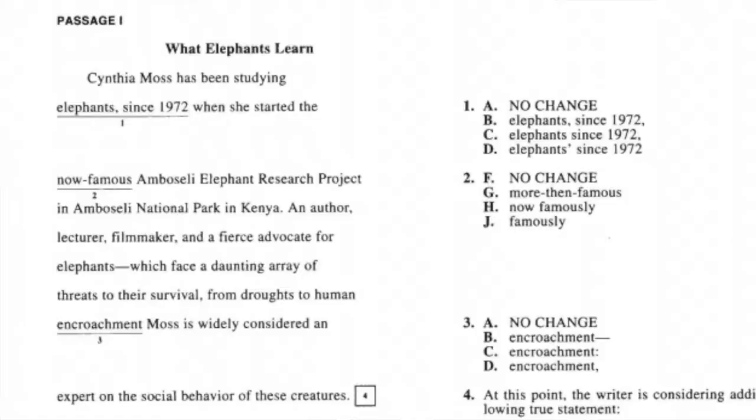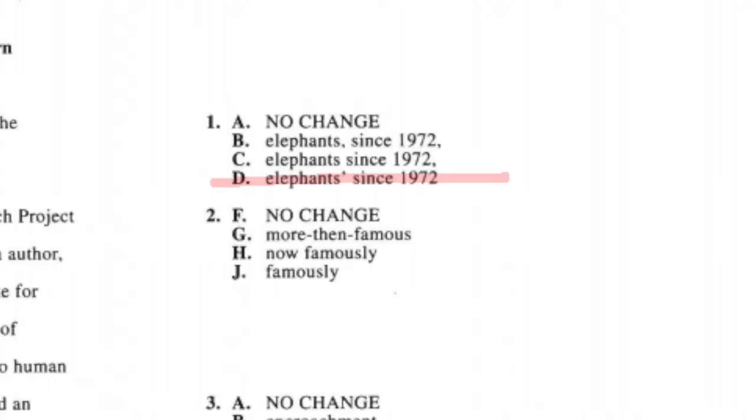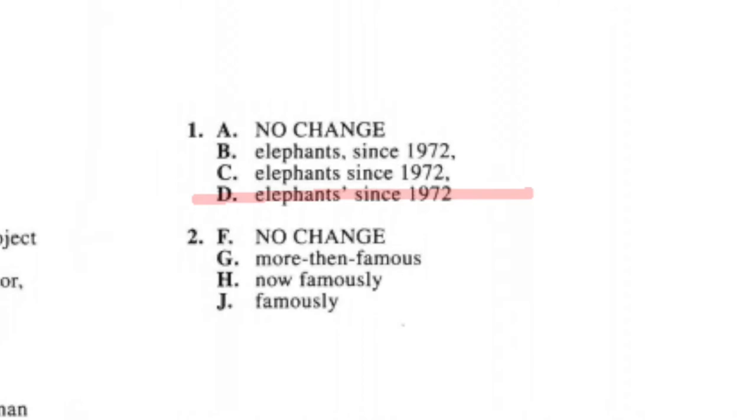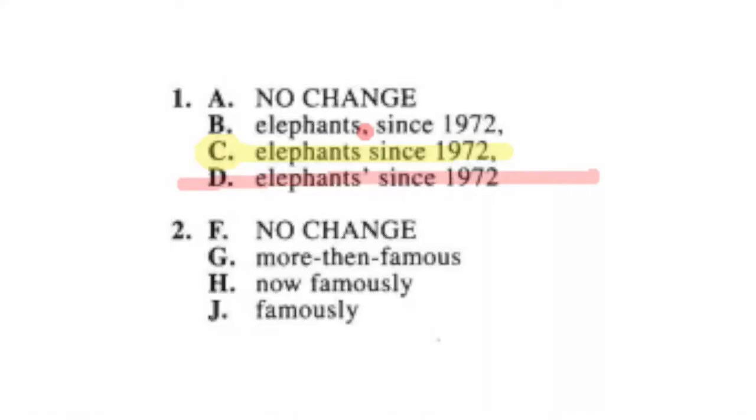Question one is a punctuation question — the only difference between each option is where the comma or apostrophe is. From the start, I know it's not the apostrophe because the elephants don't own anything, so let's eliminate D. There's no reason to have a comma after the word 'elephants,' and 'when she started the project' is a dependent phrase, so we should have a comma after 1972. The right answer is C.